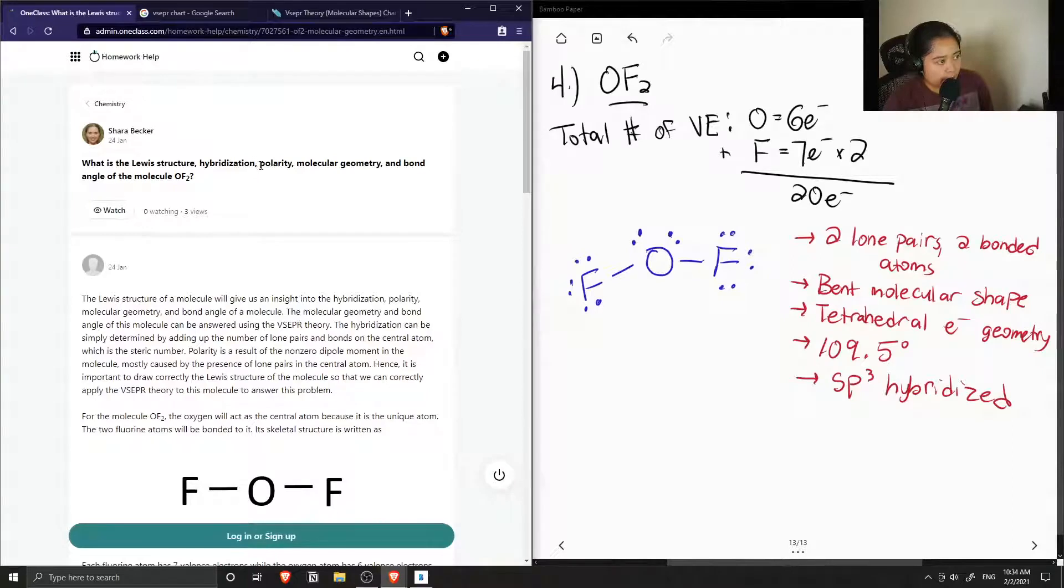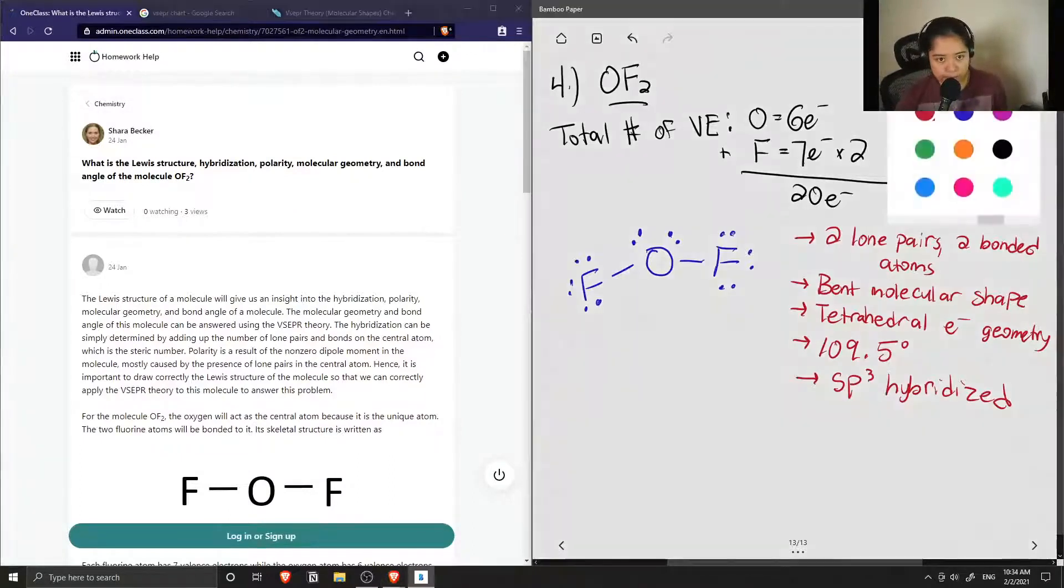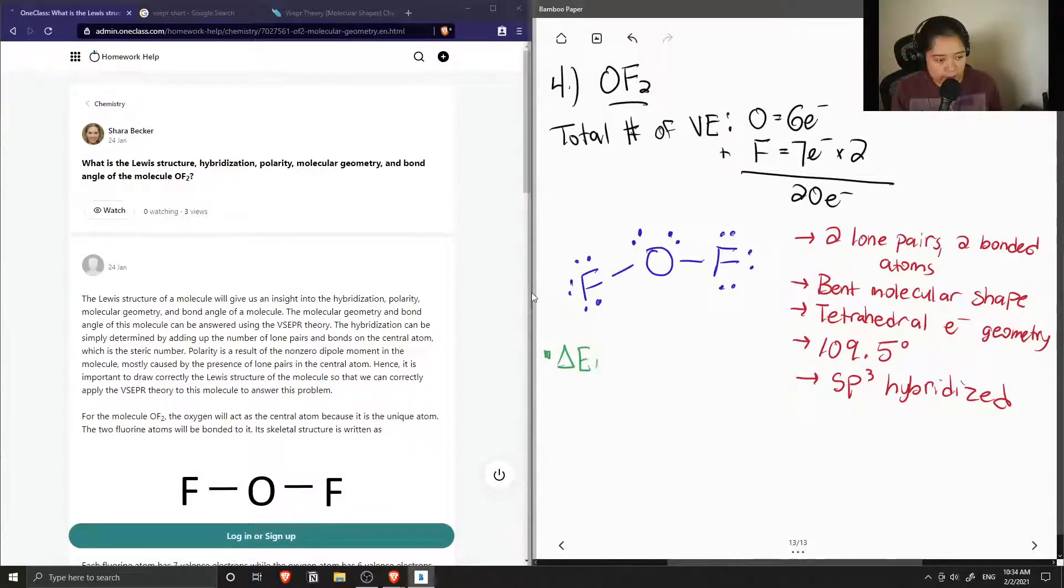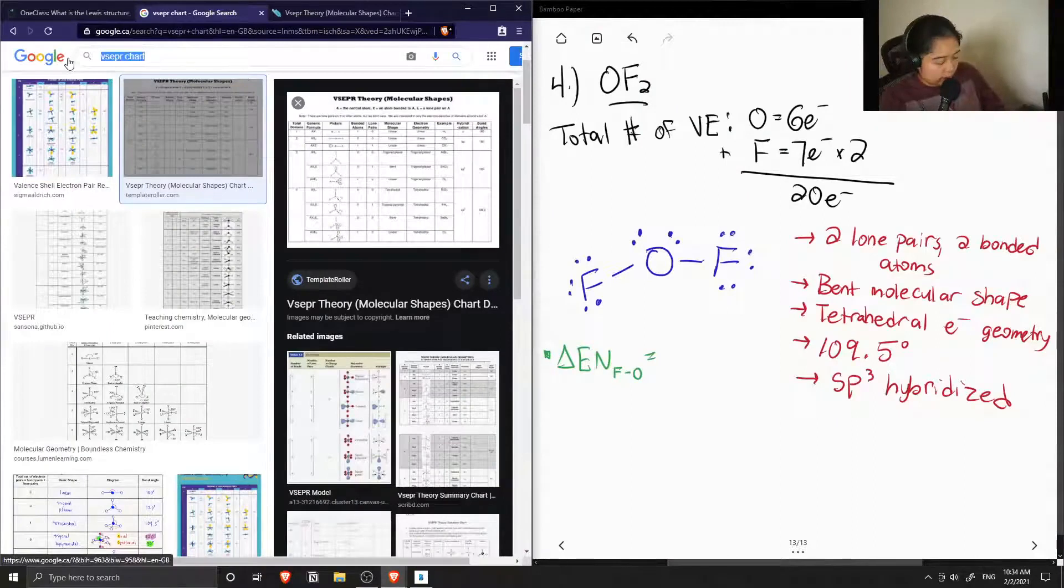This knocked off some of the things we were supposed to look for. Basically, we just need to find out whether or not this molecule is polar or non-polar. First let's find out if the oxygen-fluorine bond is polar or non-polar. To do that, we need to calculate the difference in electronegativity between our fluorine and our oxygen. Let's look up electronegativity values.